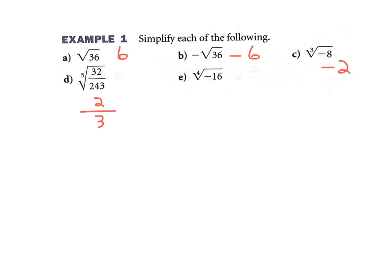And then part e: because it's a 4th root of a negative number, you cannot do an even root of a negative. It's just not real, so I'm going to put NR for not real — it's not a real number.